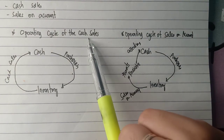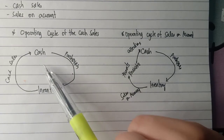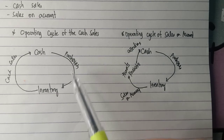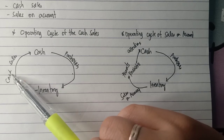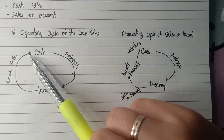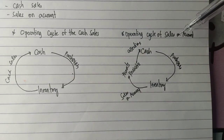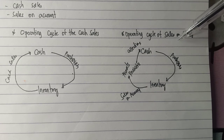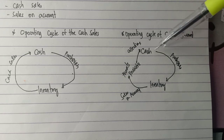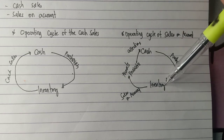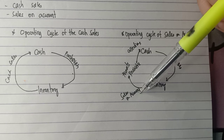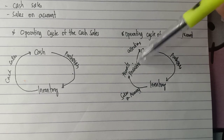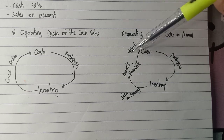To recap: in the operating cycle of cash sales, from cash, when we purchase, it becomes inventory; and when we sell the inventory for cash, it becomes cash again. In the operating cycle of sales on account, when we purchase it also becomes inventory, but when sold, it does not go directly to cash — it becomes accounts receivable first, and only becomes cash once the accounts receivable is collected.